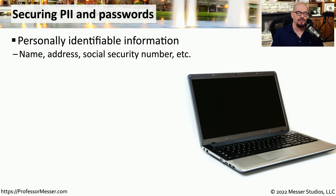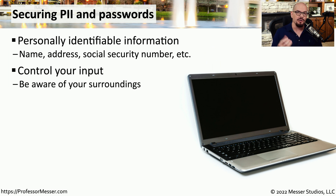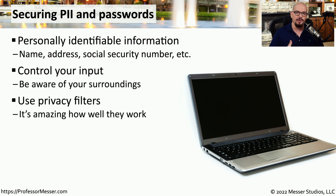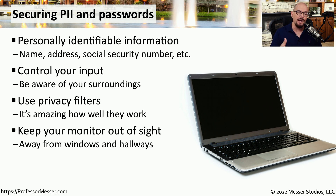Many of us have access to sensitive information as part of our normal job. Some of this information can be categorized as PII, or personally identifiable information. This might be a person's name, address, phone number, social security number, or anything else that might tie that piece of data back to that person. If you're in a public area working with this type of data, you want to be aware of who's around you and might be looking at your screen. If you're in an area where other people might be around — such as a coffee shop or an airport — you may want to consider having a privacy filter on your system so that no one to the left or right would be able to see anything on your screen. You might also want to check your monitor at work to see where it might be facing when working with PII, so that someone walking by your office can't see sensitive information on your display.